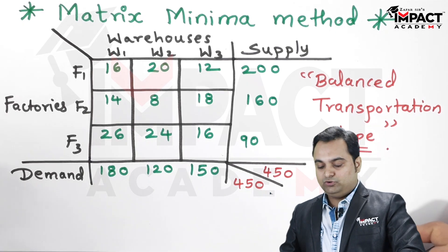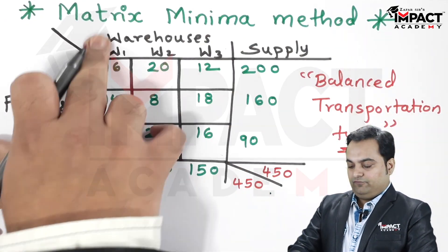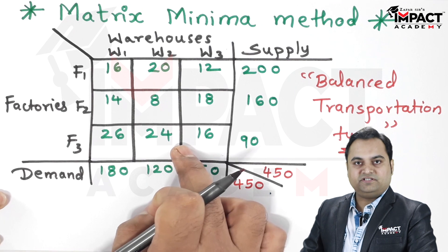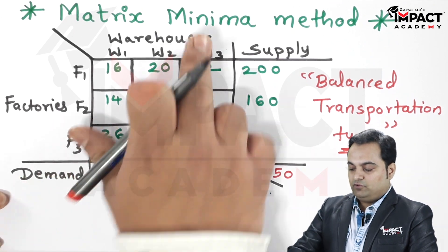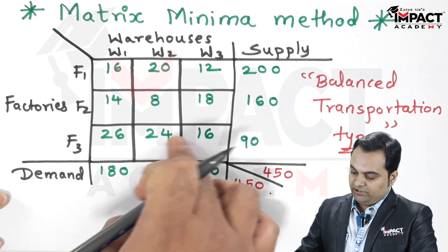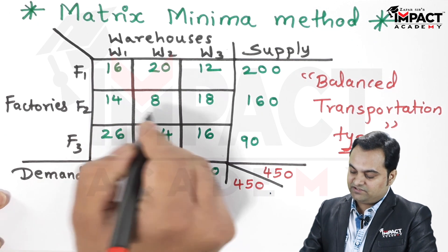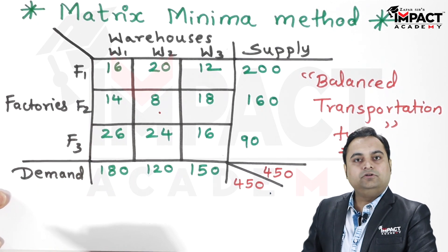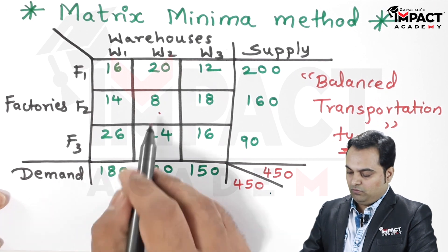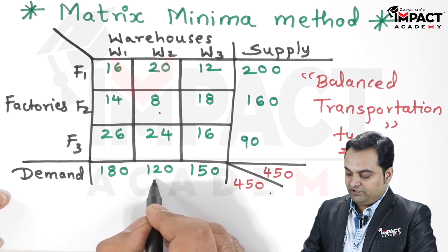Since it is matrix minima method, from the cell matrix which we have here, we have to select the minimum value. In this matrix, the minimum cell has the value 8, so we start with that. When we are looking into this cell, the demand is 120 whereas supply is 160.